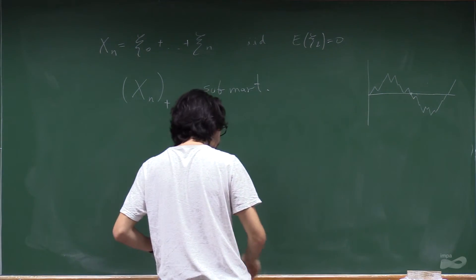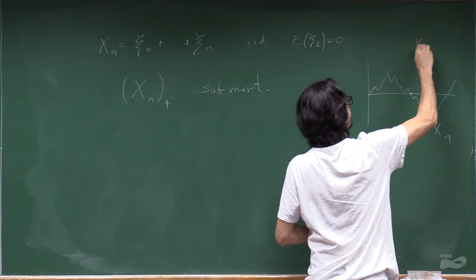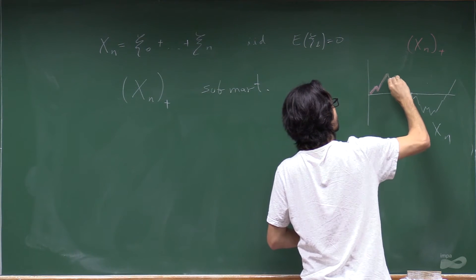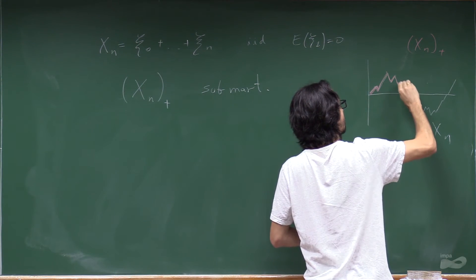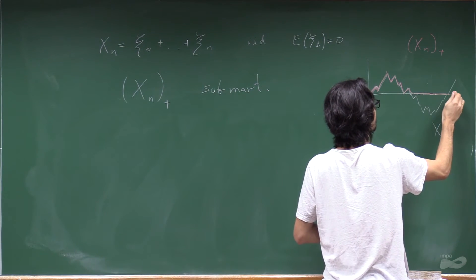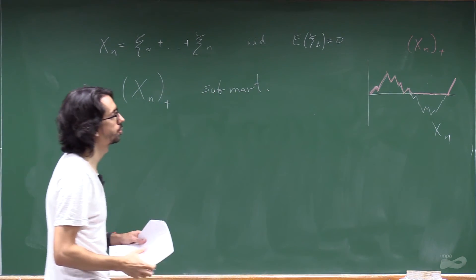So if this is the original xn, the xn plus is going to be this. It's going to follow xn until here. Then you just wait without losing money. If xn happens to recover, you recover together.